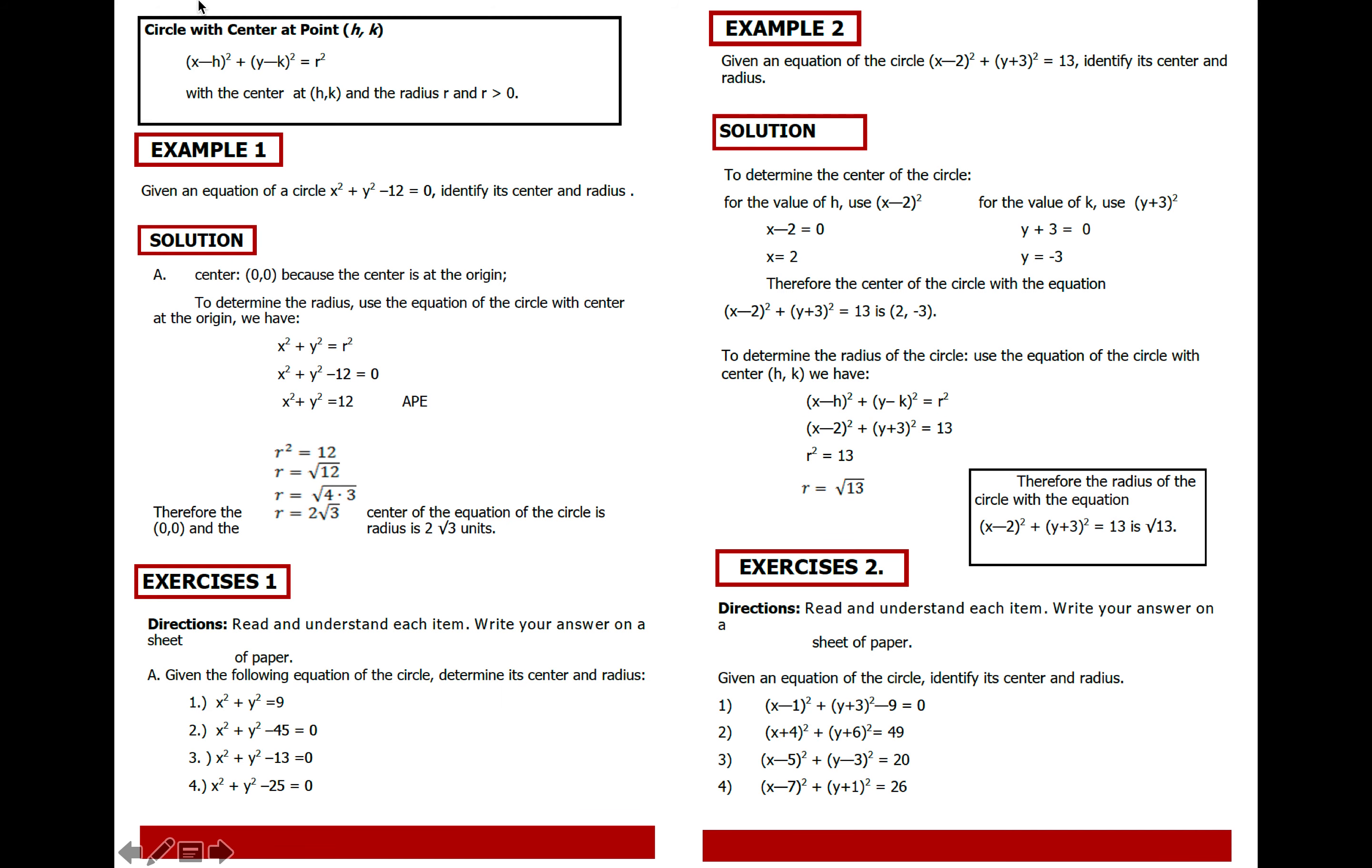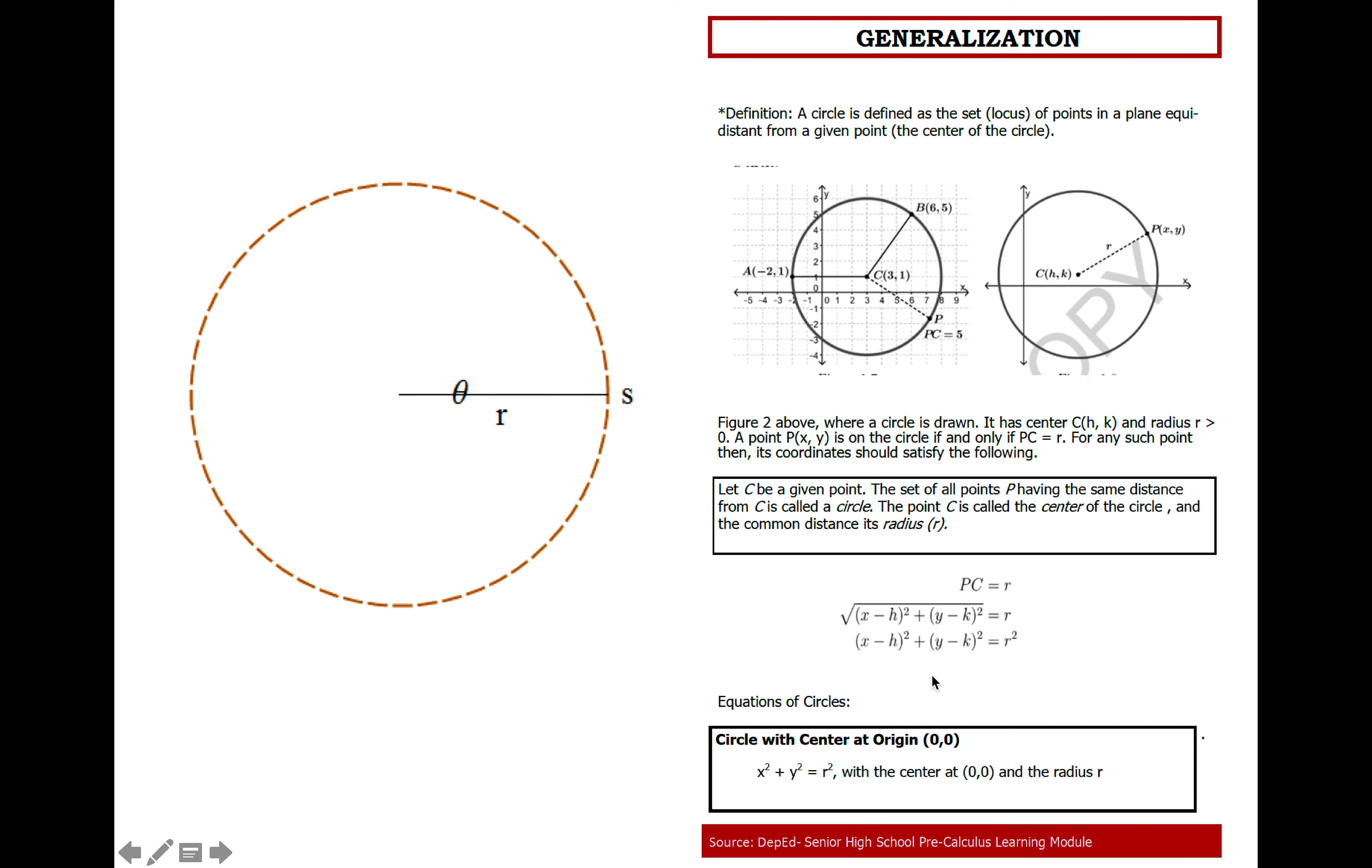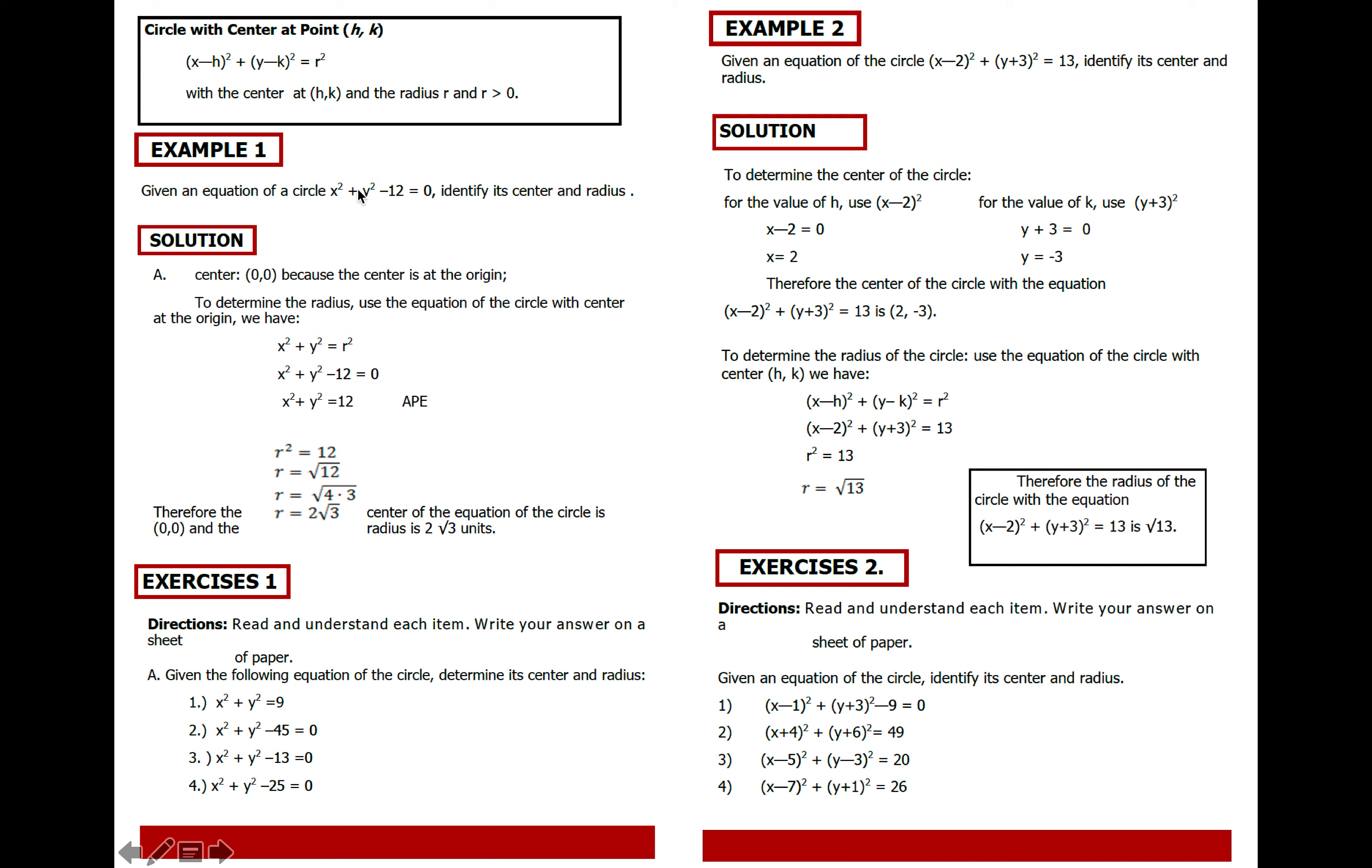This is the standard form of the equation of the circle if your center is not at the origin. But if it's at the origin, it's clear. Now let's proceed. Example. If we have the equation of the circle, x squared plus y squared minus 12, identify the center and radius. So to identify the center and radius of the circle, determine first the pattern of the equation. What does it follow? Does it follow this one or this one? So obviously, there's no parentheses. So obviously, it follows the standard equation of the circle whose center is at the origin. It's just x squared, y squared, then r squared.